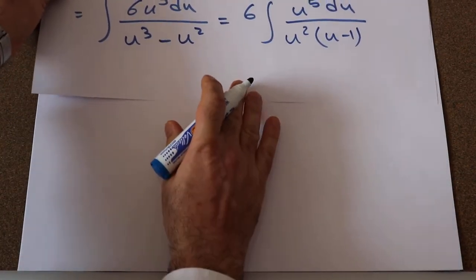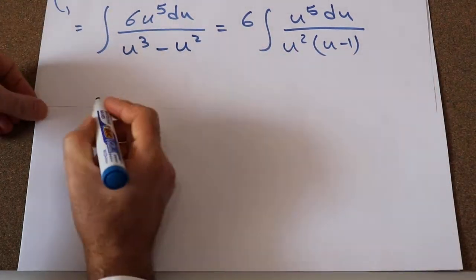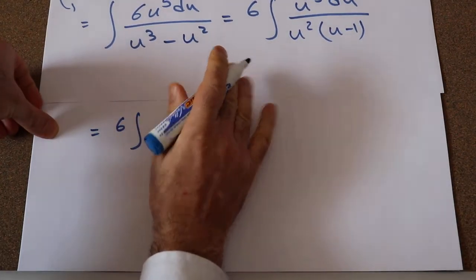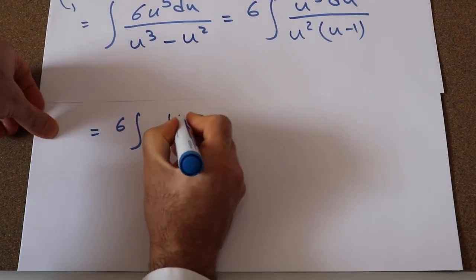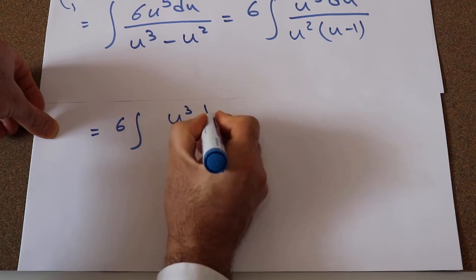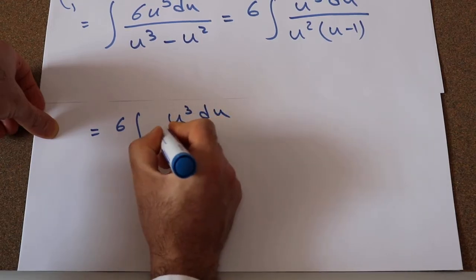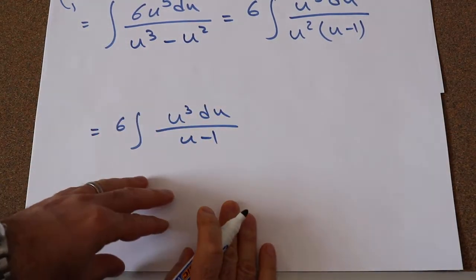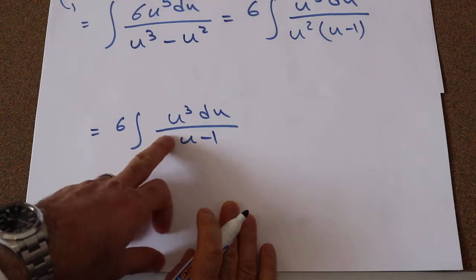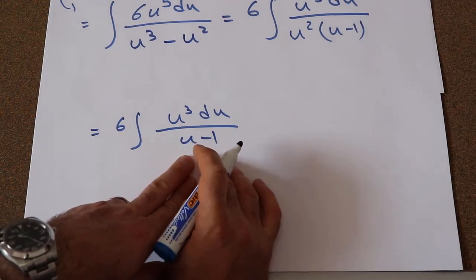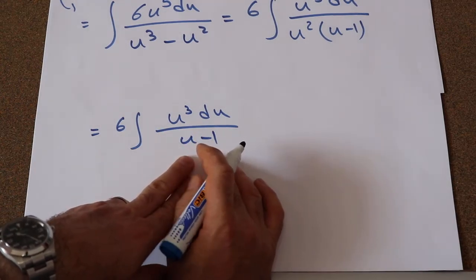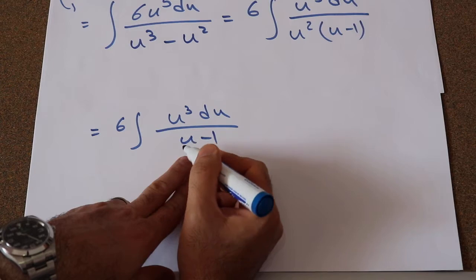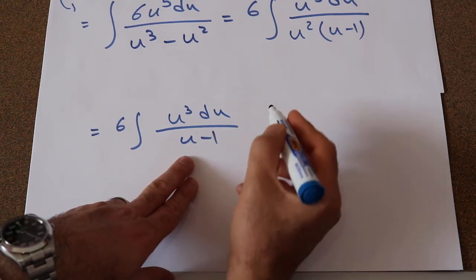This simplifies to 6 times the integral of u³du divided by (u minus 1). This is a rational function, and to calculate this integral you need to express this rational function using partial fractions.